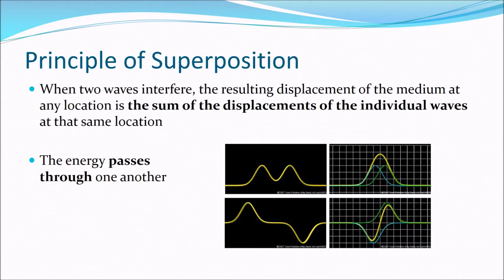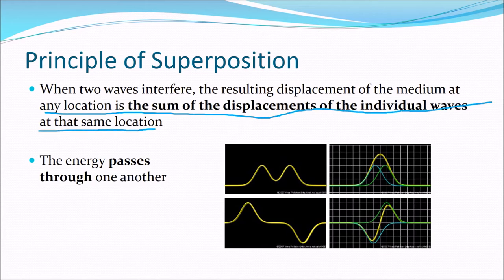The principle of superposition is essentially what was described in those slides: when two waves interfere, the resulting displacement of the medium at any location is the sum of the displacements of the individual waves at that same location. So if we have two waves, we have to add up their amplitudes at each location.